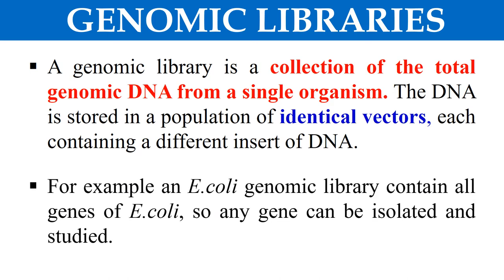That collection of hosts which contain all the genomic DNA of that particular organism — that population of hosts is known as the genomic library. It is a library which contains the total genomic DNA of a particular organism. For example, in the case of E. coli, the genomic library of E. coli contains all the genes of that bacteria, and you can isolate or identify any gene from that genomic library. So this is ultimately the genomic library — a collection of all or total genomic DNA from a single organism.